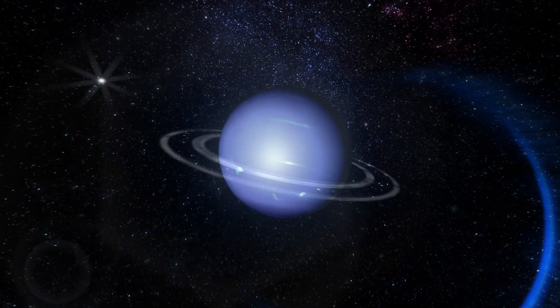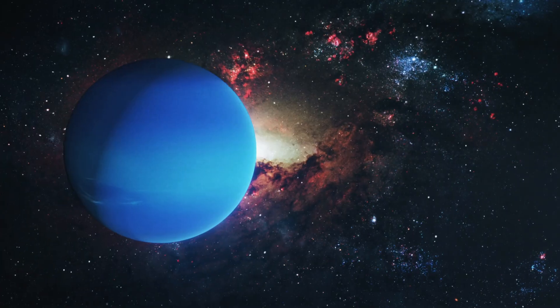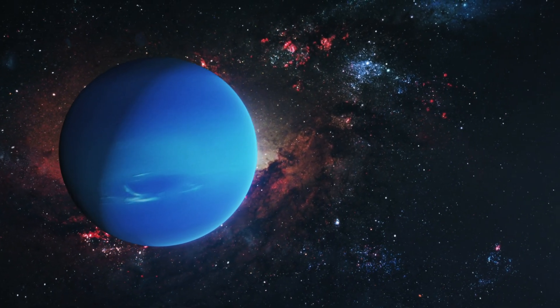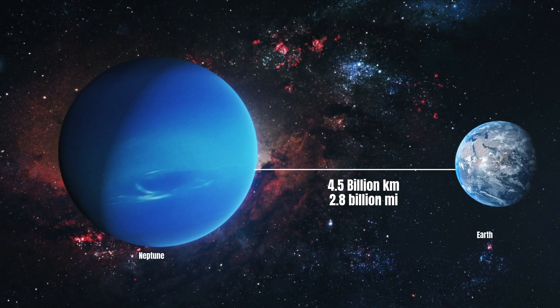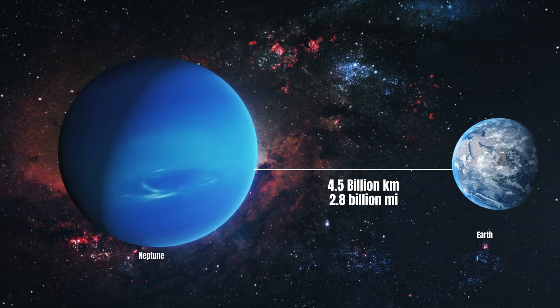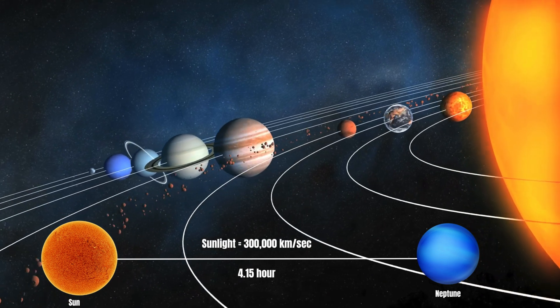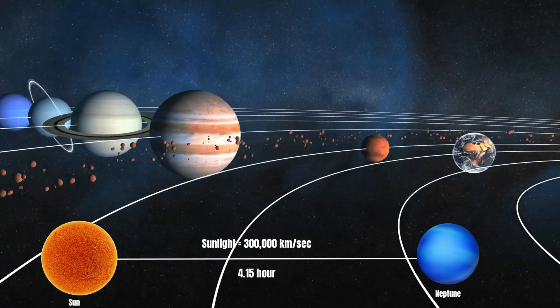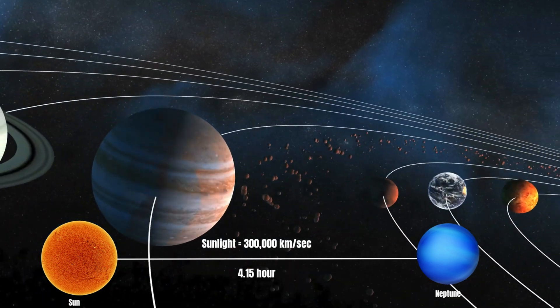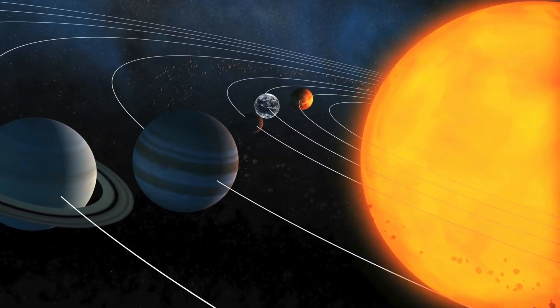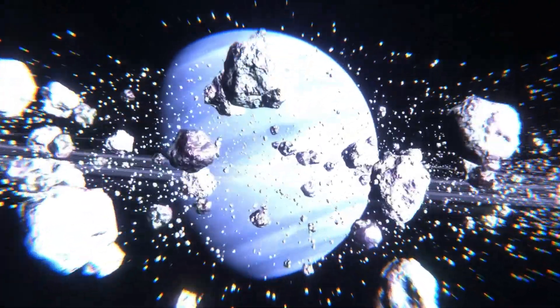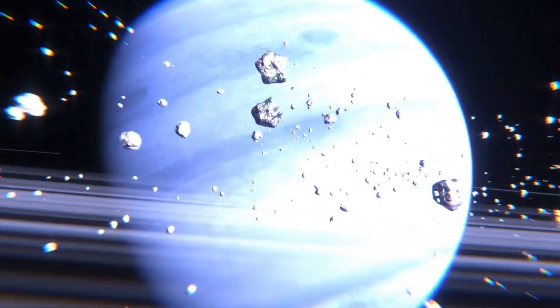Continuing outward, we reach Neptune, the distant ice giant, 4.5 billion kilometers from Earth. This planet marks the boundary of our solar neighborhood. Sunlight, traveling at 300,000 kilometers per second, takes approximately 4 hours and 15 minutes to reach Neptune. This staggering distance highlights the sheer scale of our solar system.